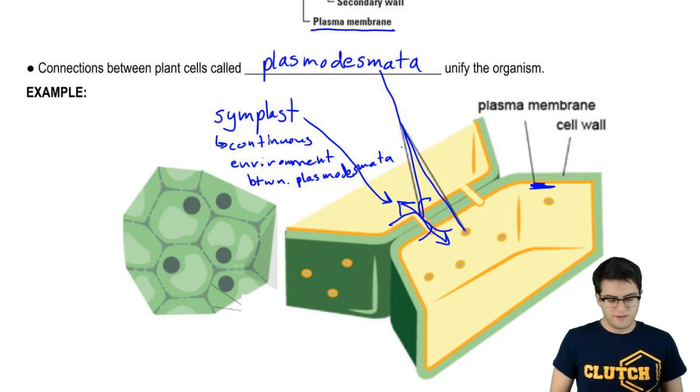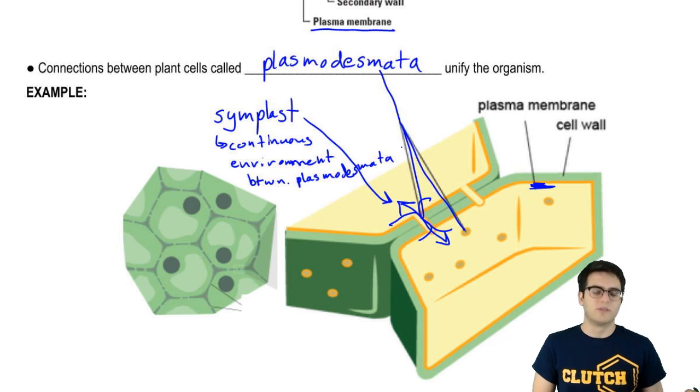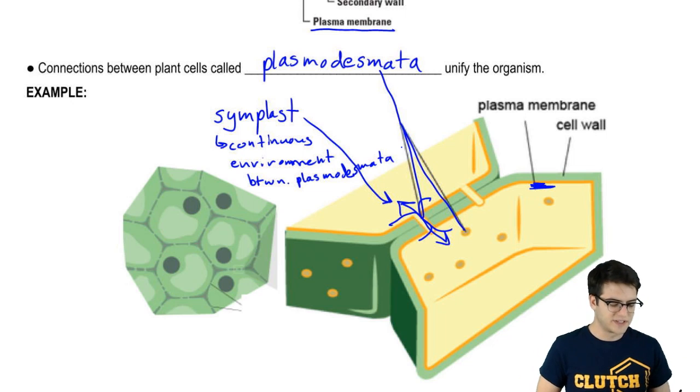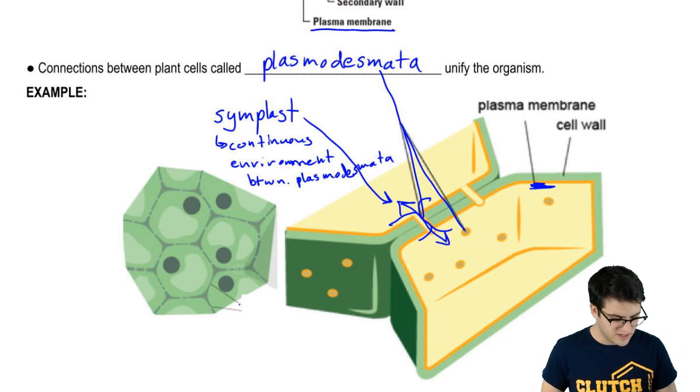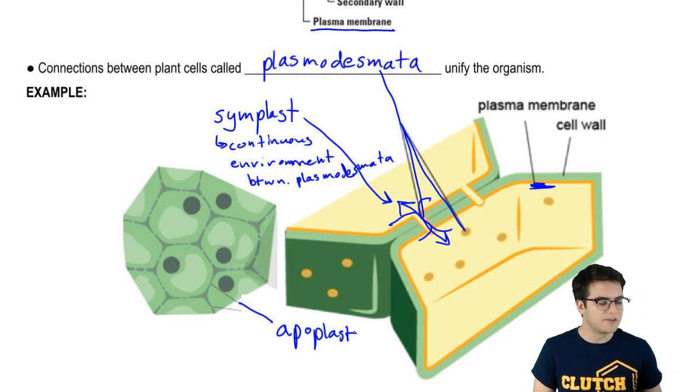Now, there is also, of course, a discontinuous environment. And we call this discontinuous environment, the apoplast. And that's the environment of the cell walls, middle lamella, all that jazz. All right, let's turn the page.